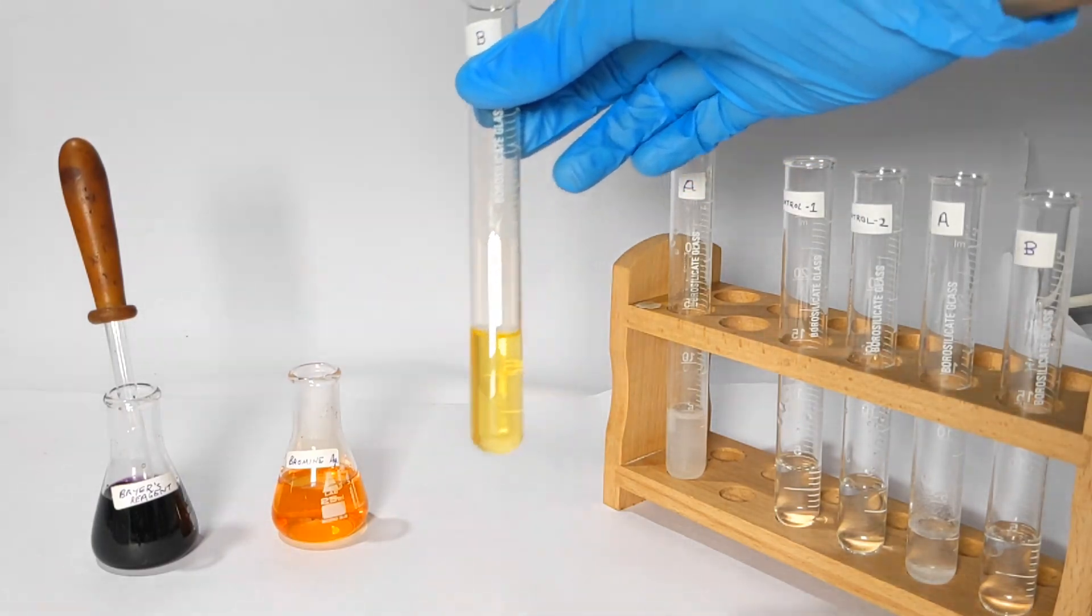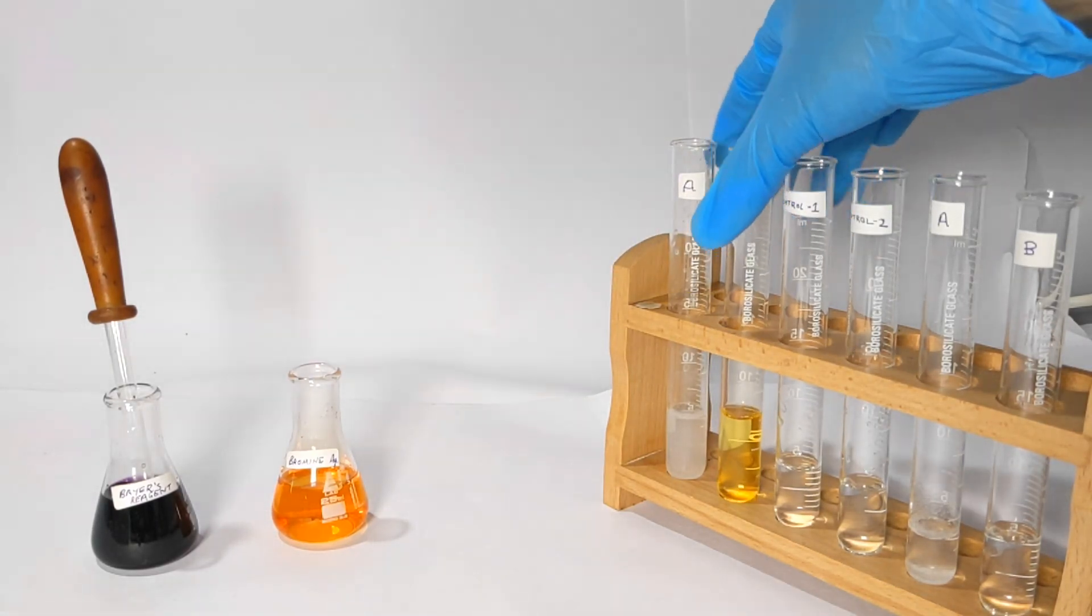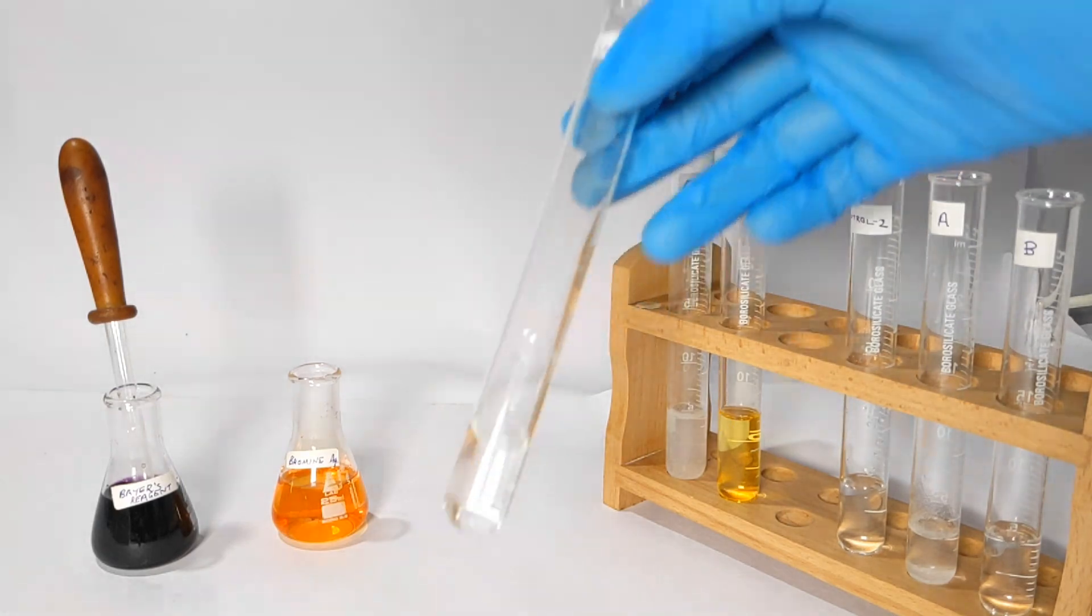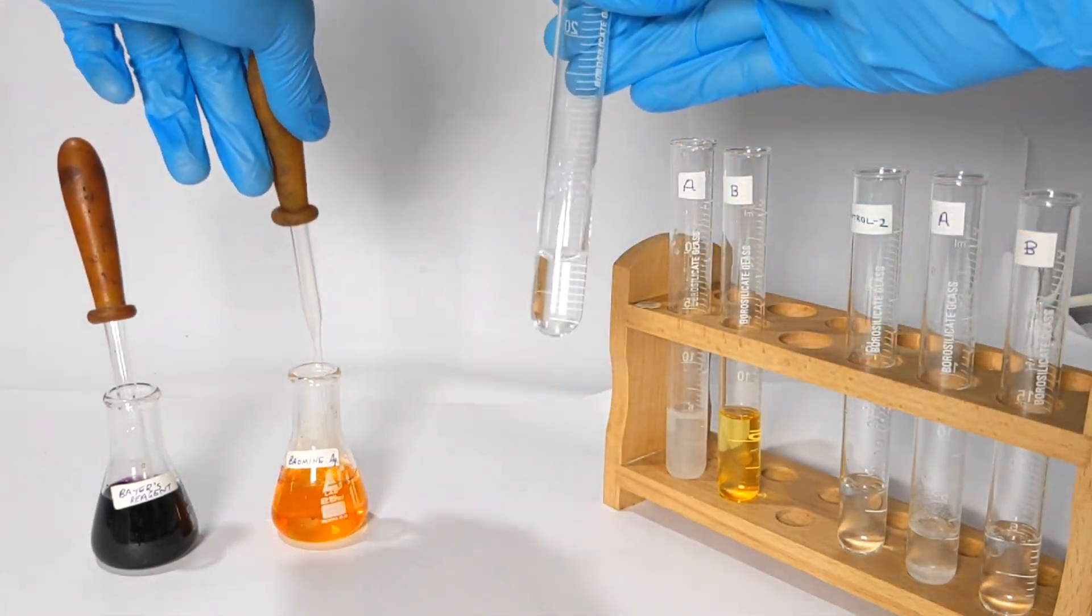Now for the completion sake, we will add the bromine water to the control which has pure water in it. You will see the color remains as in test tube B.